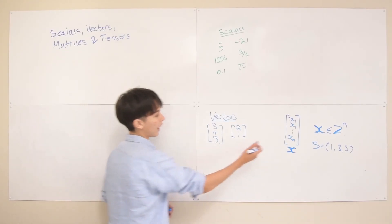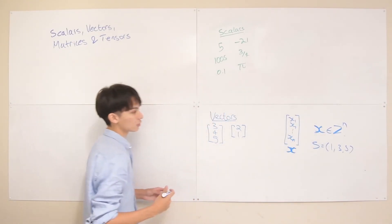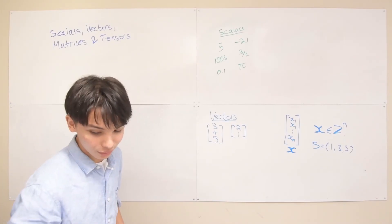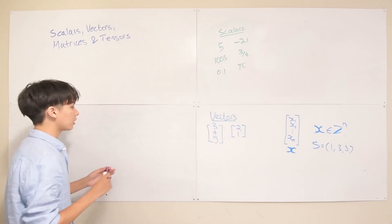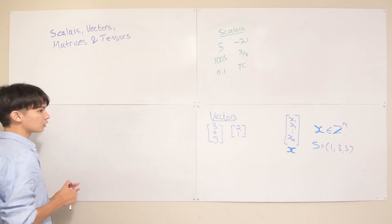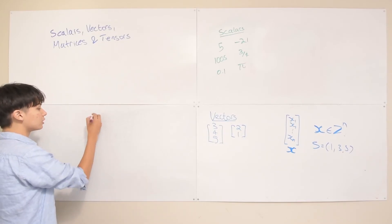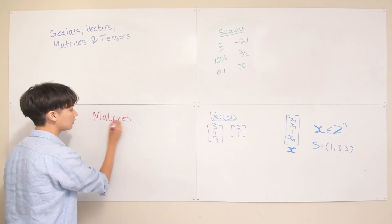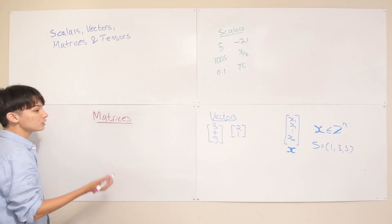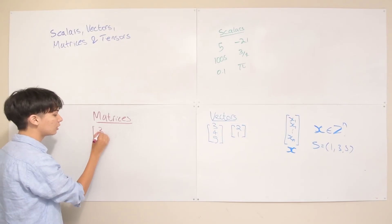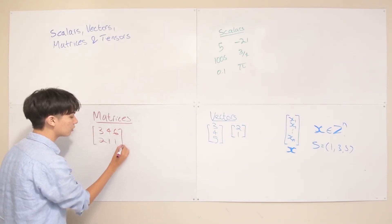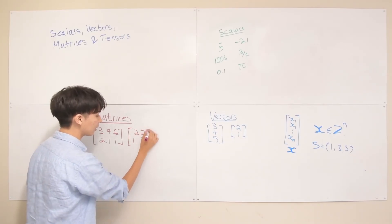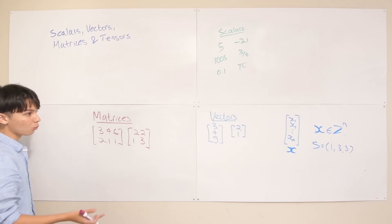Now we're going to expand by adding columns — put a bunch of vectors together — and we get something called a matrix. Matrices are just boxes of numbers. For example, [3,4,6; 2,1,1] is a matrix, or square matrices like [2,2; 1,3]. These can be any size you want. You can think of vectors as a subset of matrices — a vector is just a 3×1 matrix with 3 rows and 1 column. The first example is a 2×3 matrix and the second is a 2×2 matrix. Rows first, then columns.